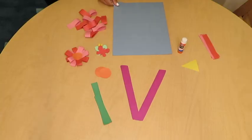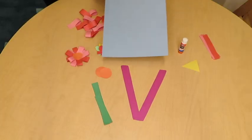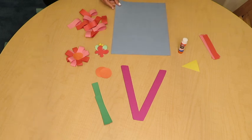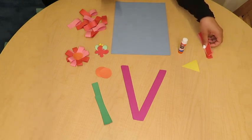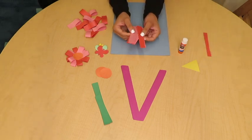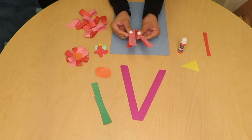So today for our arts and crafts, we're going to do V is for vase. Ready? So today for our arts and crafts, we're just going to need construction paper. I'm going to use blue. We need strips of paper. I'm going to use pink and red, and this is going to be for our flower.